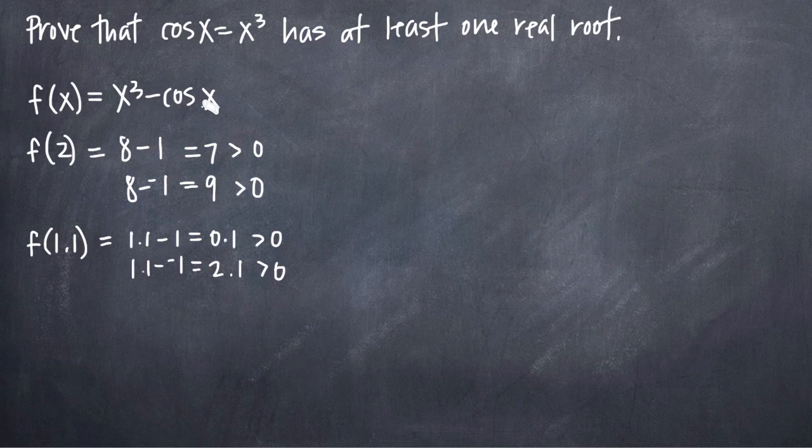So now let's look at the other end of the range of the cosine function. Remember that the lowest value the cosine function can attain is negative 1. So if we look at negative 2, for example...